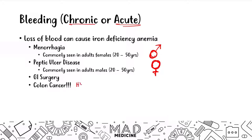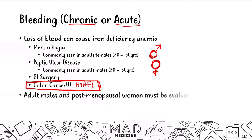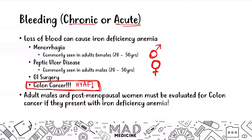Colon cancer is very high yield. Patients will often complain of bleeding, fatigue, and nonspecific symptoms, and the only abnormal finding may be anemia. So one of the causes to consider is colon cancer. Importantly for Step 1 — and for your medical career — adult males and postmenopausal women must be evaluated for colon cancer if they present with iron deficiency anemia. You have to rule out colon cancer to protect the patient.